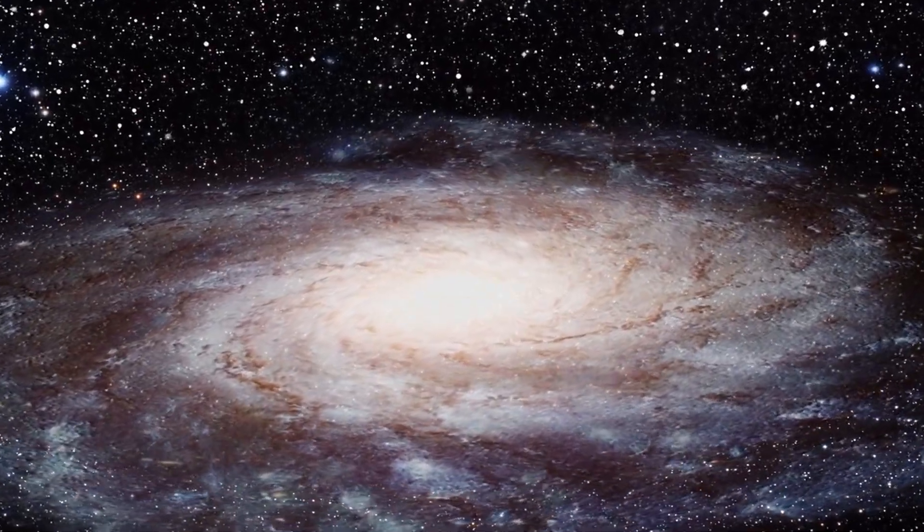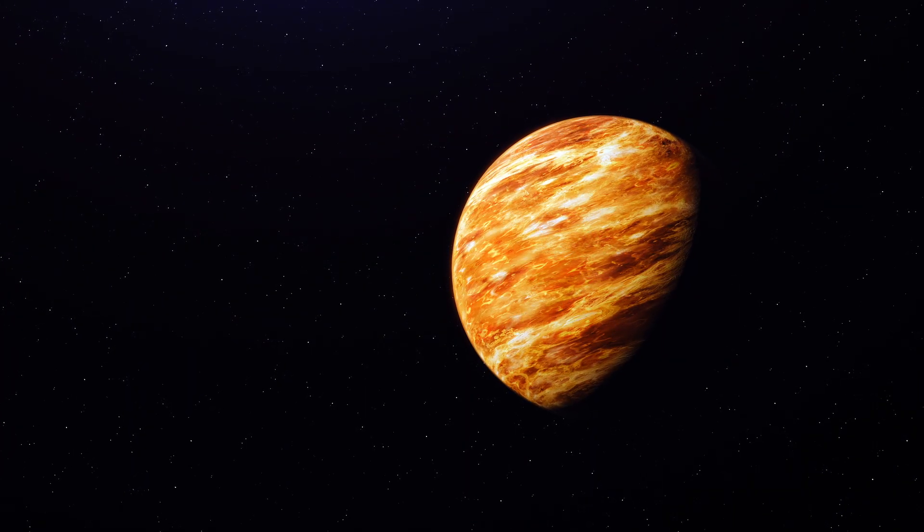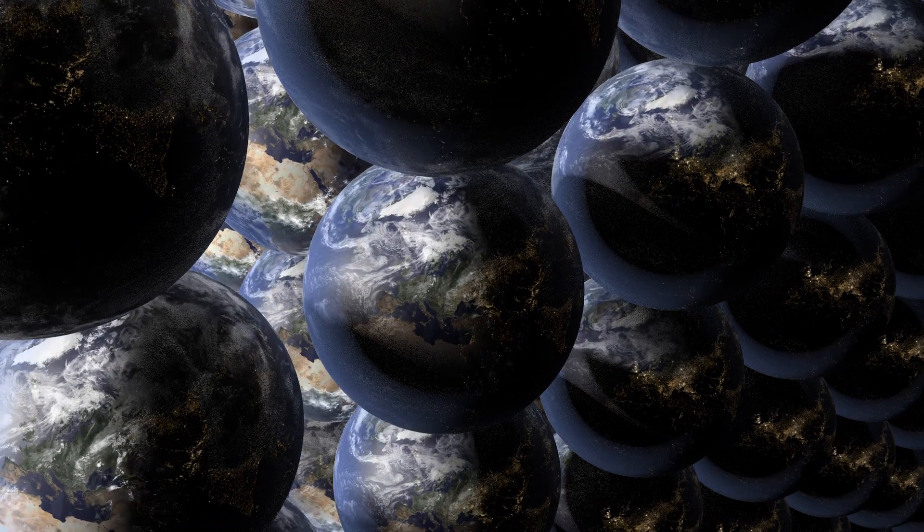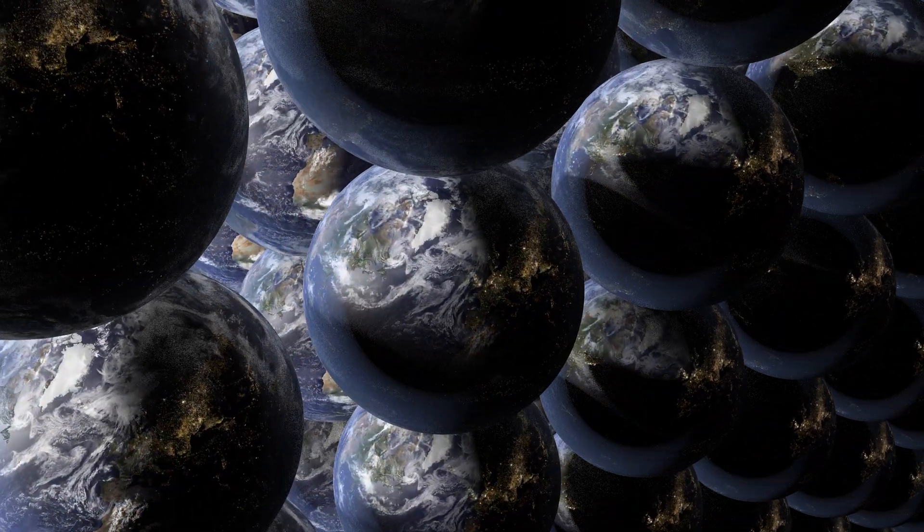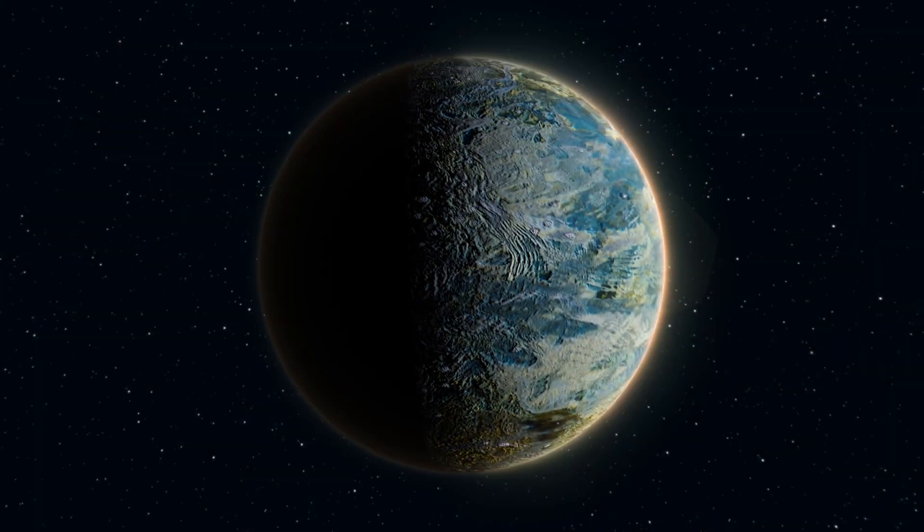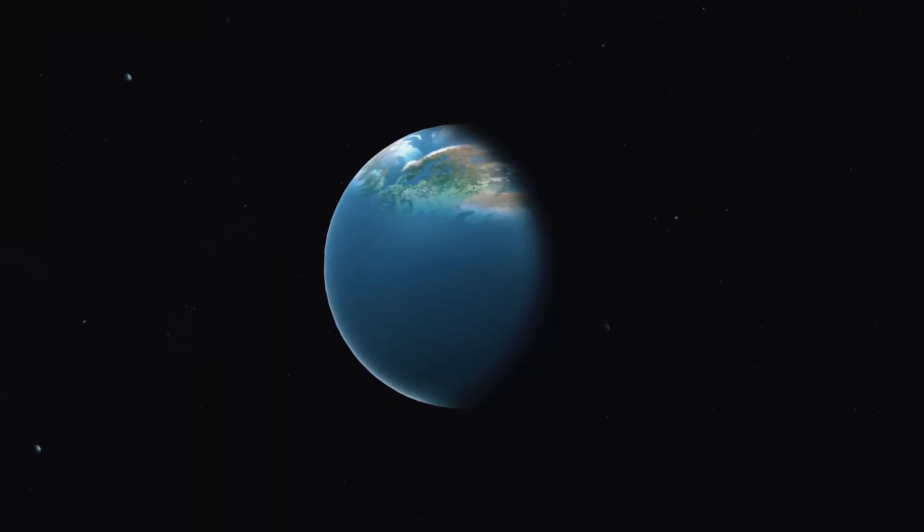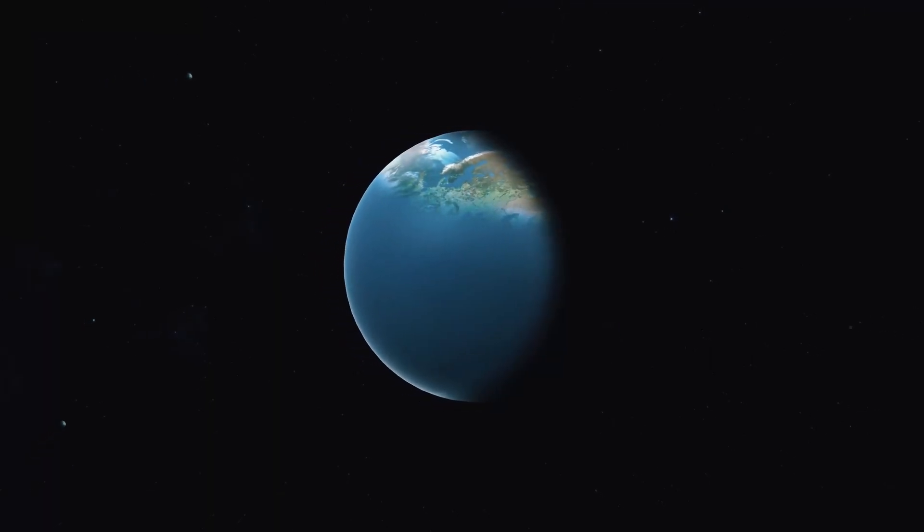In our Milky Way galaxy, there are at least 50 billion planets, of which at least 500 million are in the habitable zone. Some of them look like Earth, and there are also some planets that are more habitable than Earth.